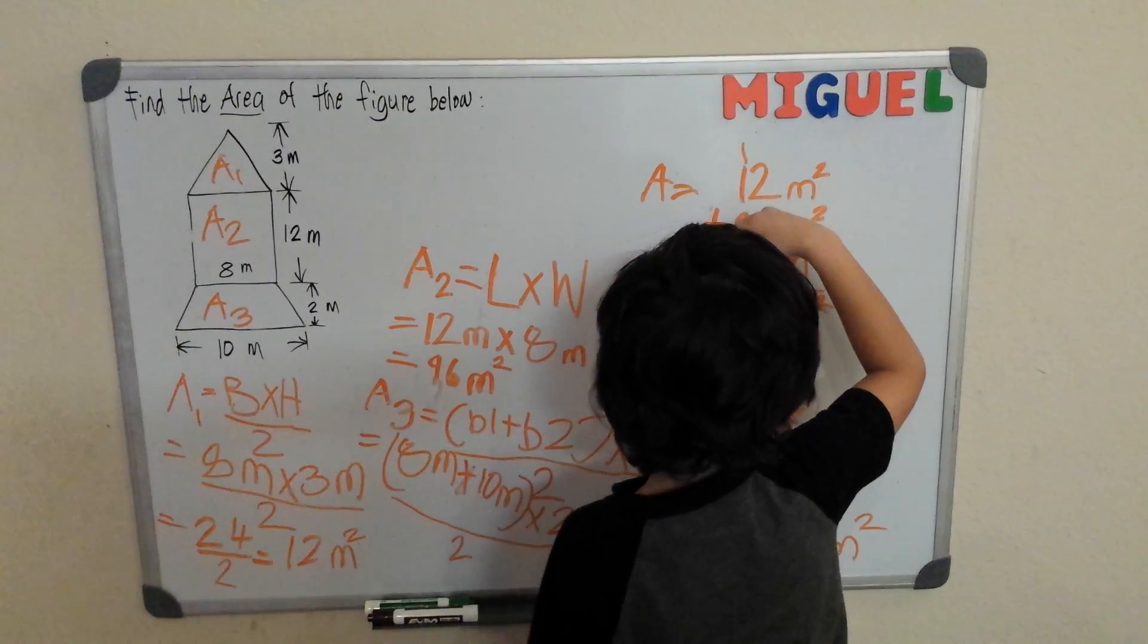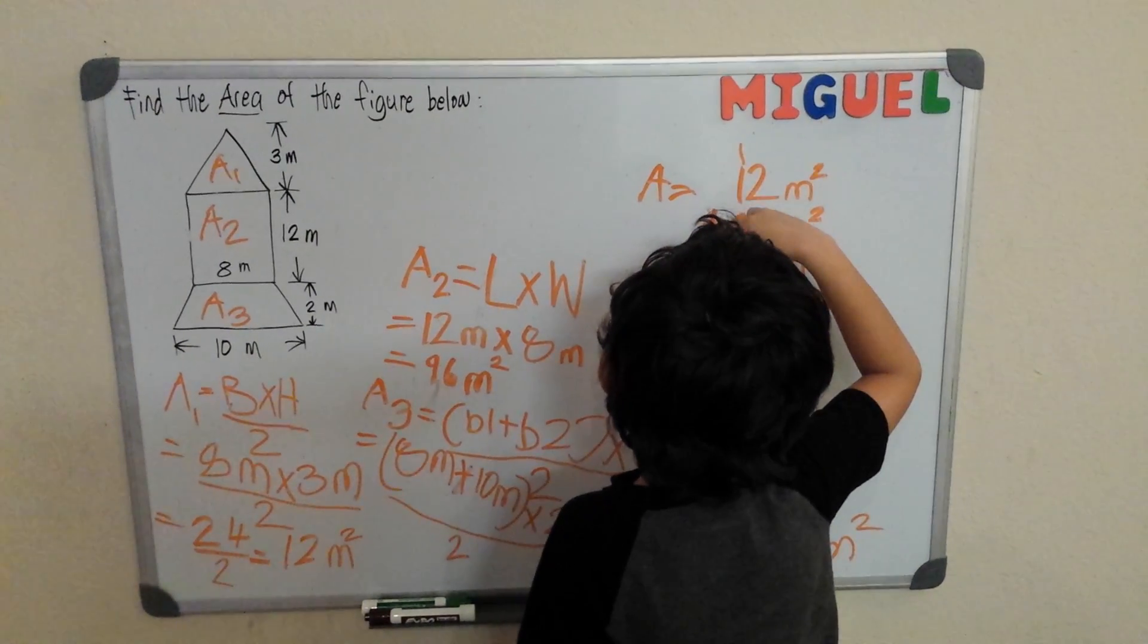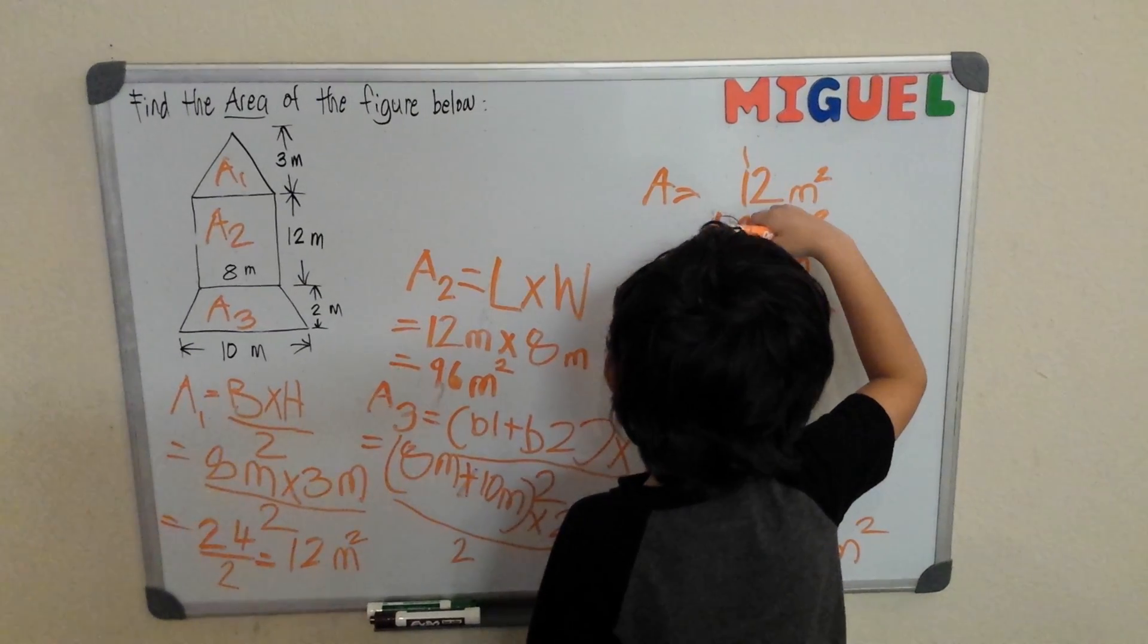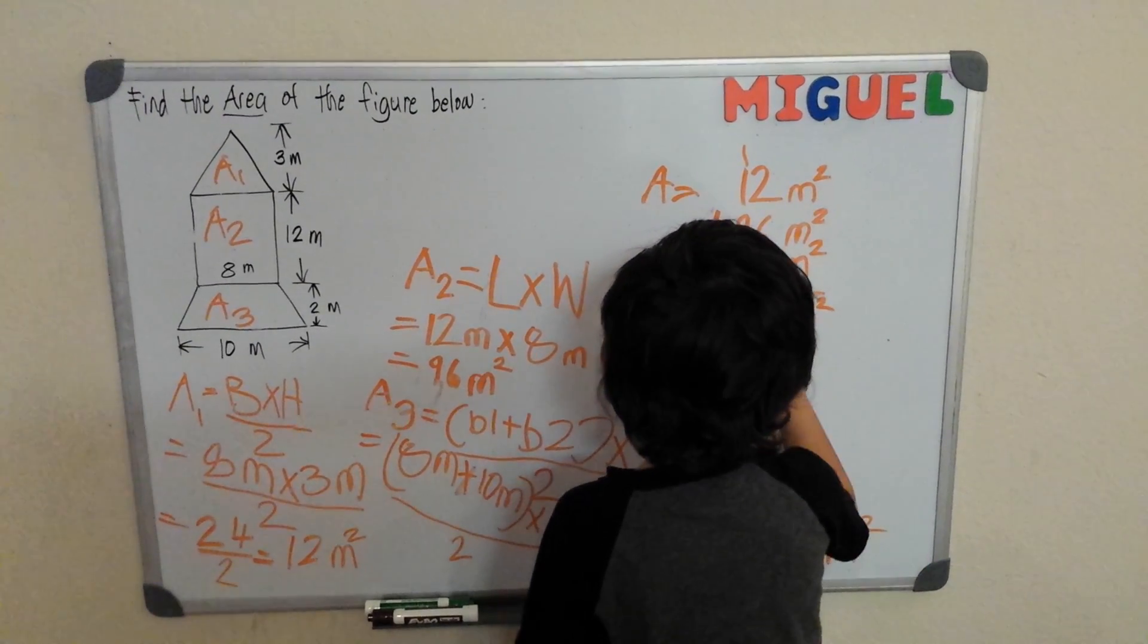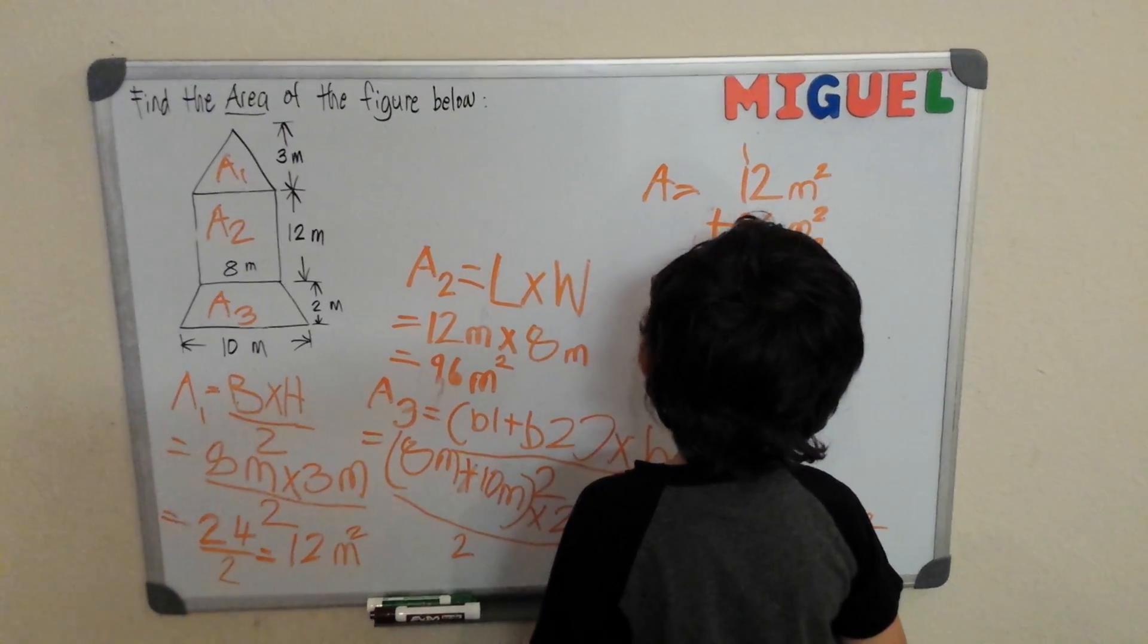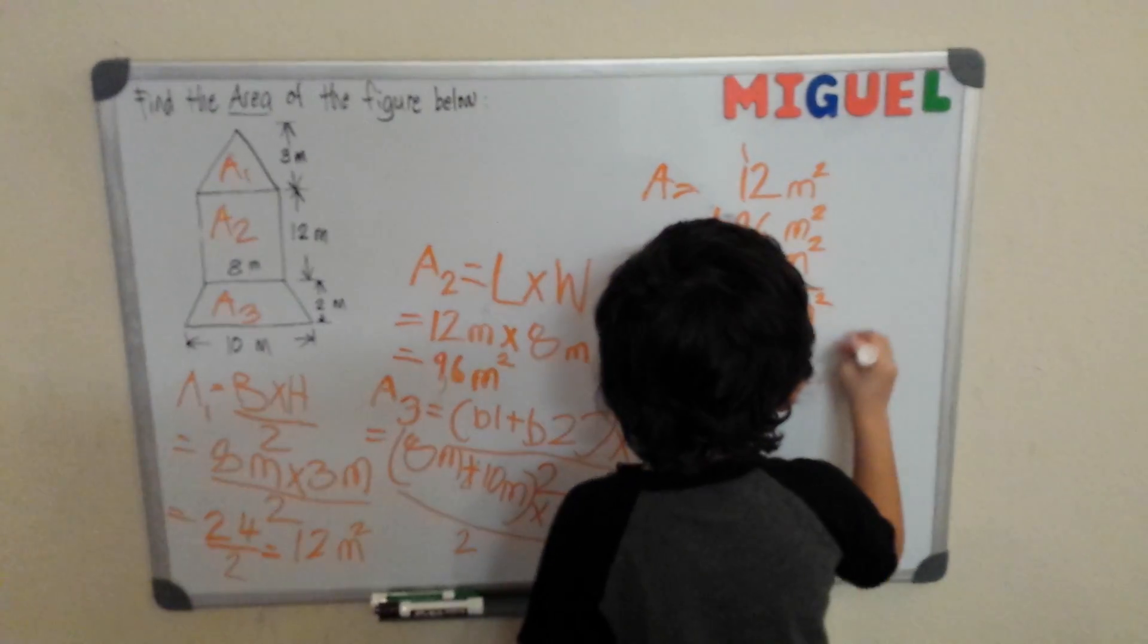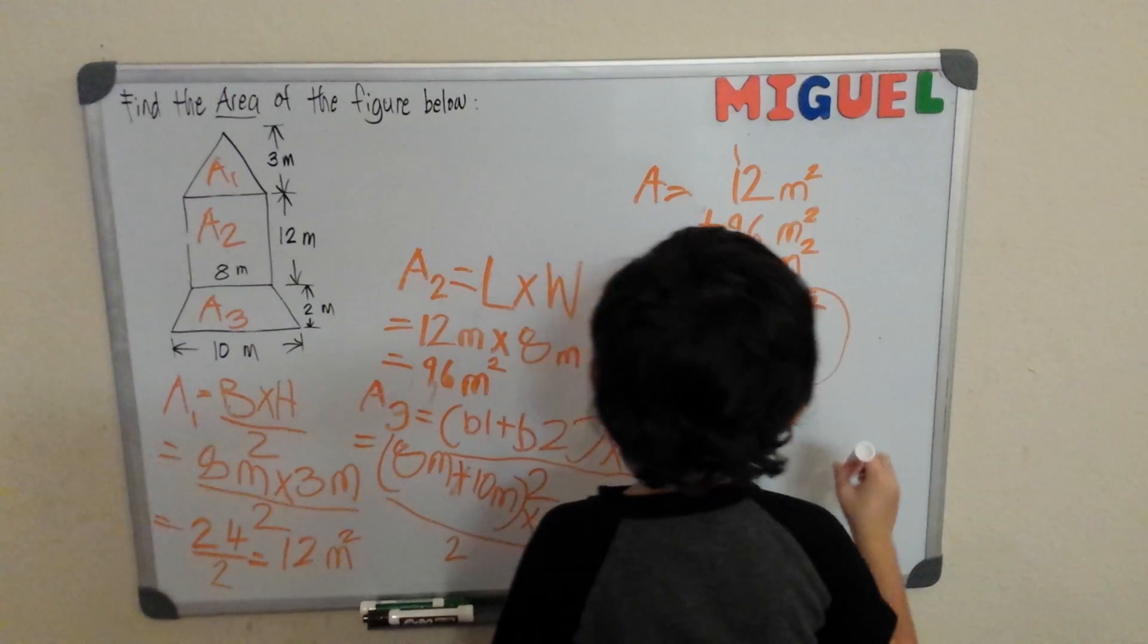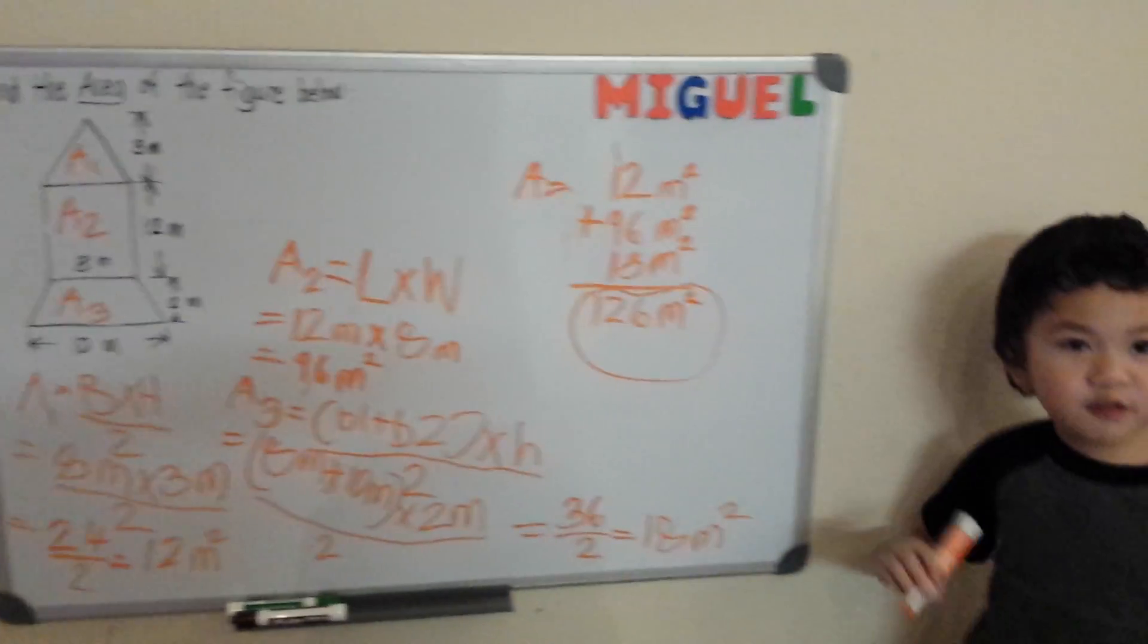1 plus 1 is 2, plus 9, that will be 2 plus 9 is 11, plus 1 is 12. So our area of the rocket ship is 126 meters squared.